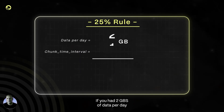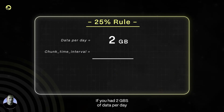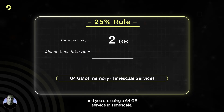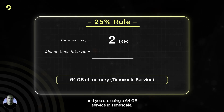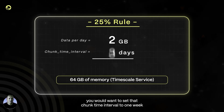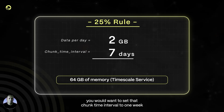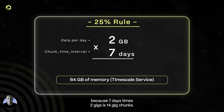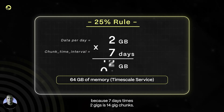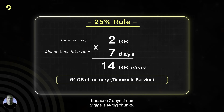If you had two GBs of data per day and you are using a 64 GB service in TimescaleDB, you would want to set that chunk time interval to one week — because seven days times two GBs equals 14 GB chunks.